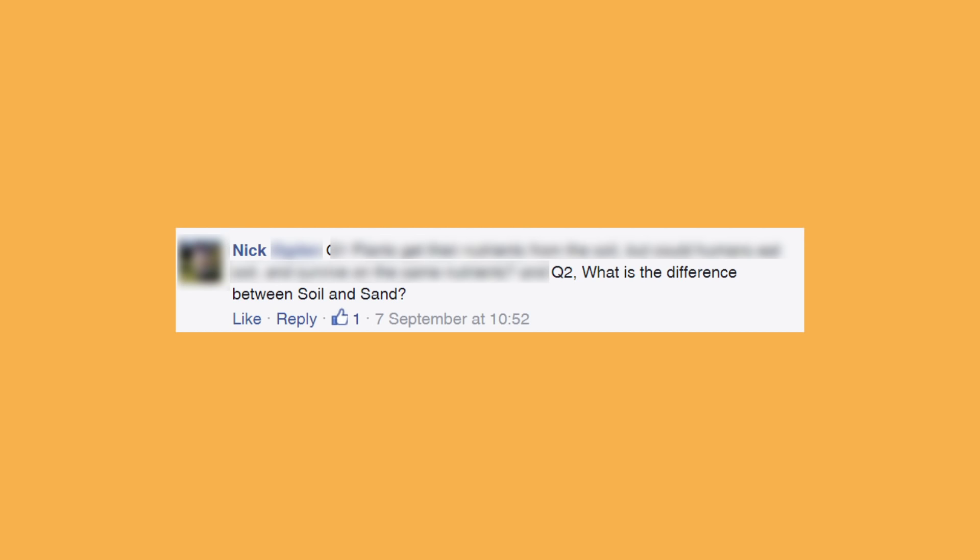The next question is related to soil formation: what is the difference between soil and sand? Well, basically sand is a textural class of soil. Soil is made up of organic matter mixed with mineral material — that could be clay, silt, or sand. So you can get soils that have a very high amount of sand within them, and some very immature soils on sand dunes, for example, could have very high concentrations of sand.